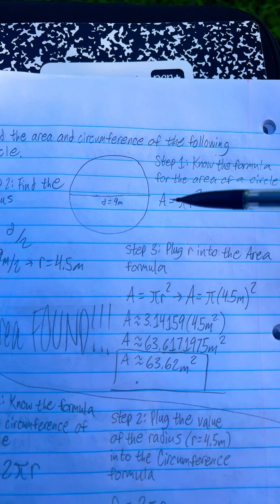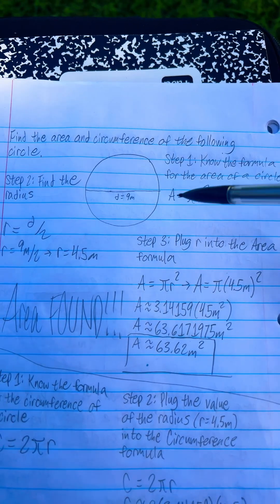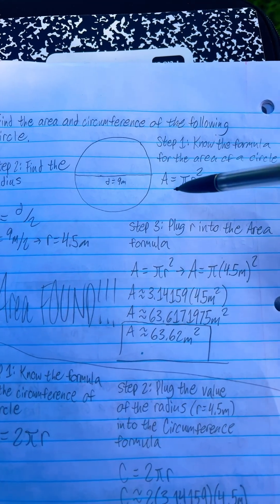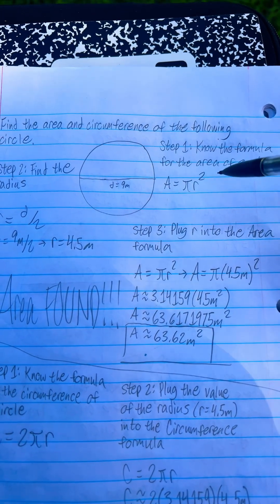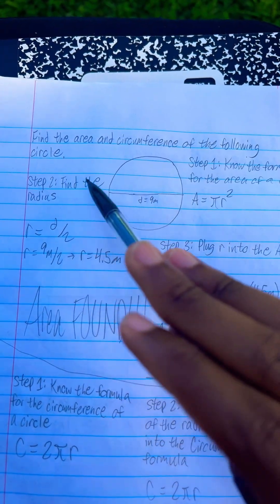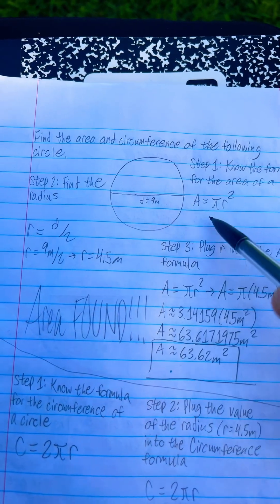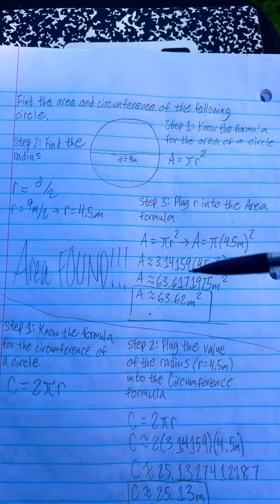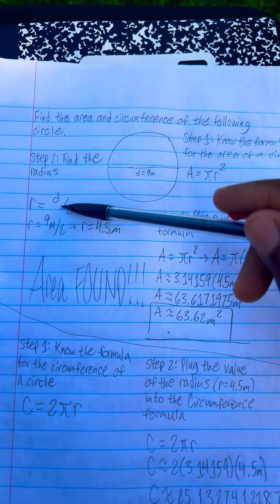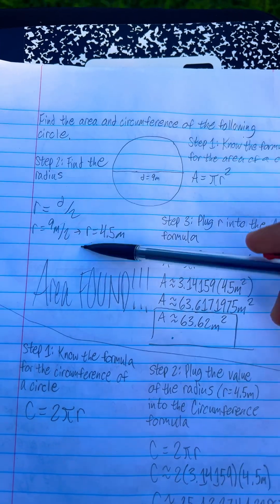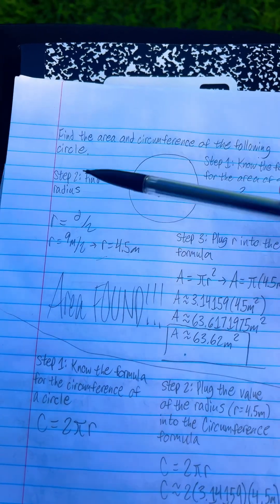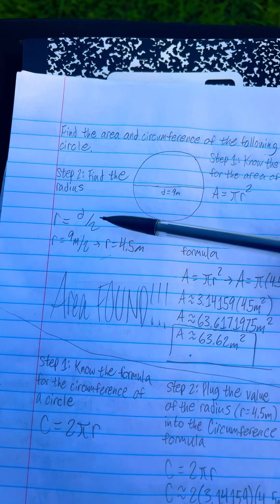Find the area and the circumference of the following circle. Step one is knowing the formula for area — that's obviously pi r squared. Step two is to find the radius. You get the radius by dividing the diameter by two. The radius is half the diameter.